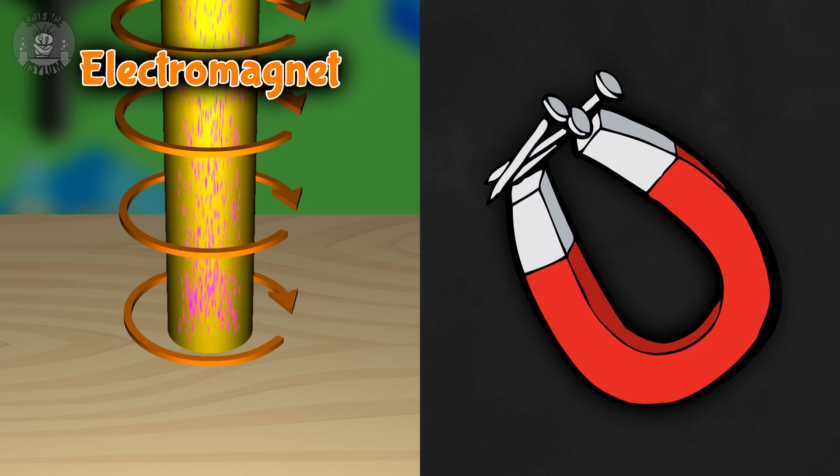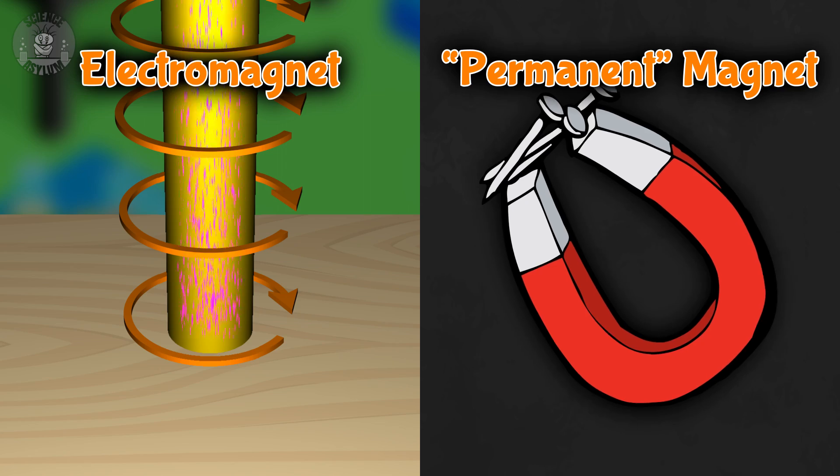We have what seems to be two different kinds of magnets. An electromagnet and what we call a permanent magnet. But in the end, we'll see that both types of magnets are really caused by the same thing. Let's start with the names.